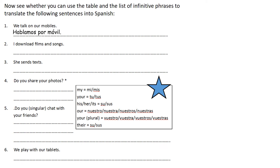I download films and songs. Well, descargar is to download, so remember we need to take that AR off and put an O on because I'm doing it, and it will become descargo. And then the rest stays the same: descargo películas y canciones.